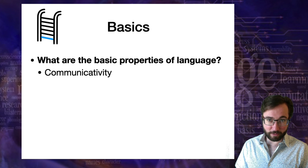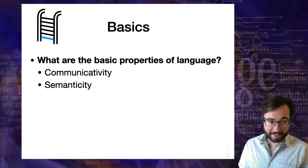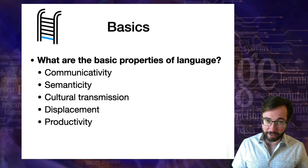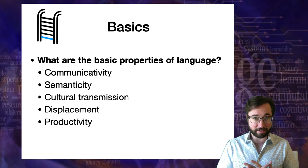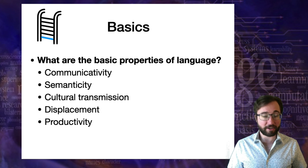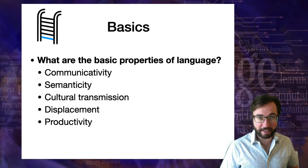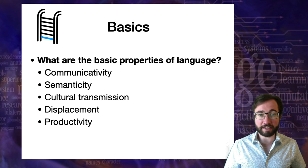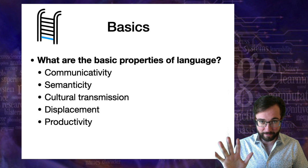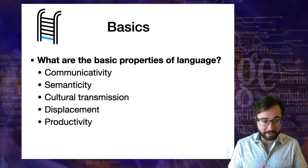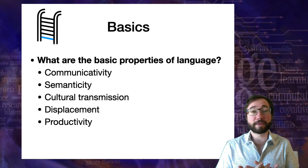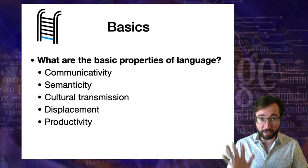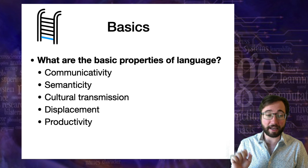The basic properties of human language are communicativity, semanticity, cultural transmission, displacement, and productivity. These are five of the core properties of human language — they don't really exhaust all of human language. When we look at other communication systems, natural and artificial, we will see that all of them have some of these five properties. Only human language has all five. Human language is defined by having all five of these simultaneously.